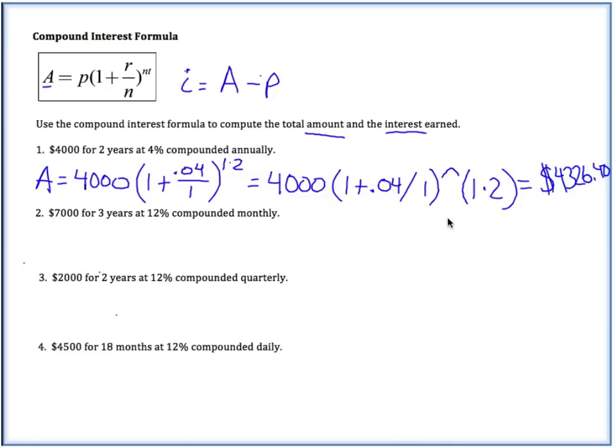Now this is the amount that your $4,000 has grown to in the time of 2 years. So how much interest do we have left? Well, to find our interest, we're going to take that amount, 4,326.40, and we're going to subtract our original amount invested of $4,000, and that is going to give us an interest of $326.40.